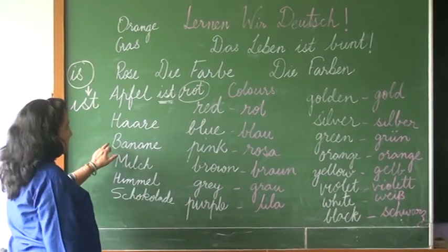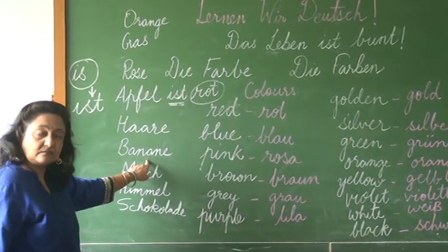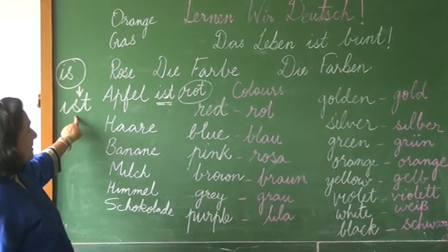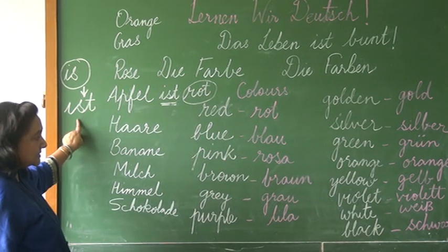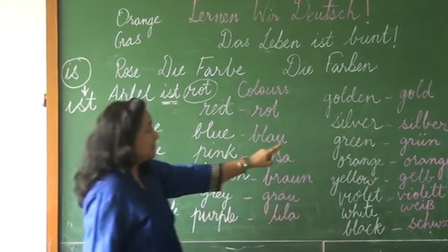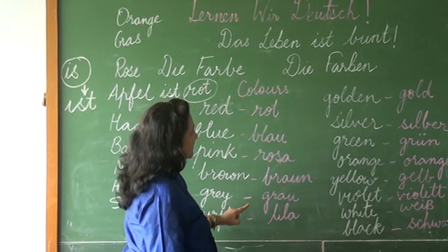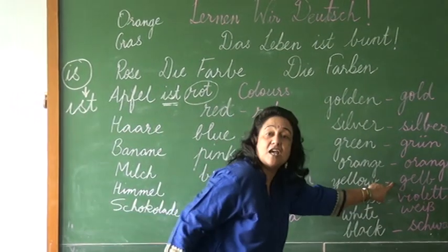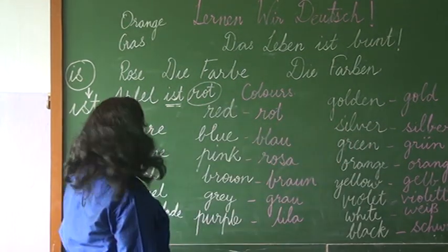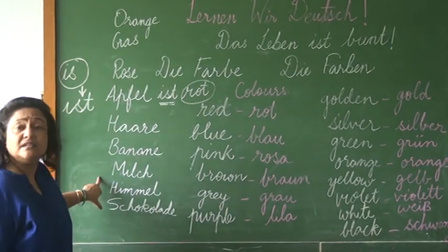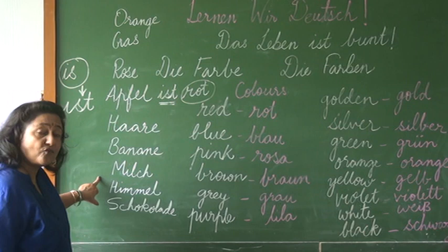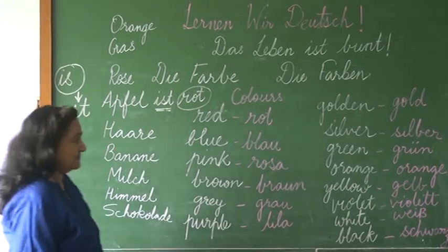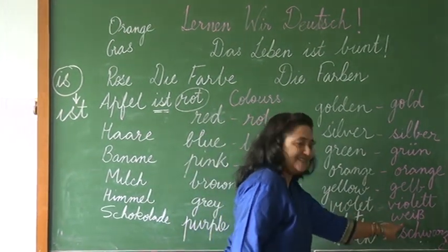Banana — it is pronounced as Banane. Banane ist gelb. Can you see gelb here? Yes, we have Gelb. Next: Milch means milk. Which colour is milk? White. So: Milch ist weiß.